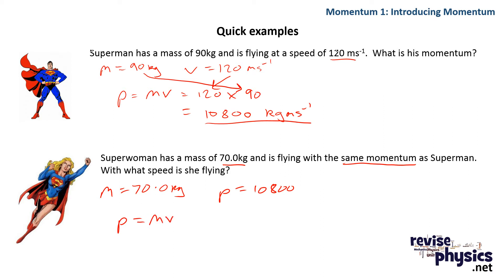Rearrange that to get it in terms of v - that means I need to take the m down to the bottom, so p over m equals v. Plug my numbers in there: 10,800 divided by 70 equals v, which equals 154 meters per second.